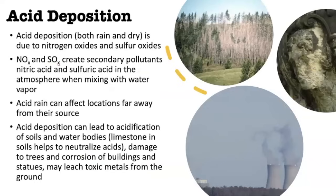Moving on to acid deposition — and the reason I'm not just calling it acid rain is that acid deposition can be both acid rain or dry deposition, which is basically particulate acid falling out of the atmosphere. So when pollutants are released into the atmosphere that result in acid formation, it can come out as both wet and dry deposition. This is primarily due to nitrogen oxides (NOx) and sulfur oxides (SOx), which mix with water vapor to create the secondary pollutants nitric acid and sulfuric acid, contributing to acid deposition.